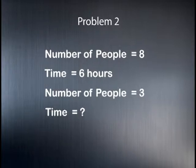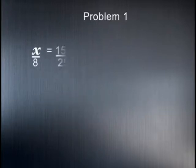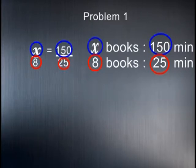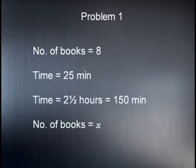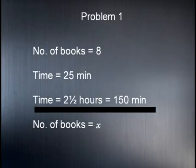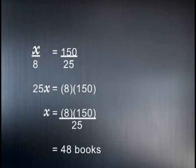While Sam is busy completing the problems, let us look at how he should solve them. For the first problem, we make the unknown number of books x. We set x divided by 8 equal to 150 divided by 25 — the 150 comes from converting 2 and a half hours into minutes. Cross multiplying gives 25x equals 8 multiplied by 150, giving an answer of 48 books.